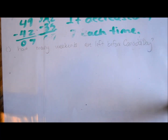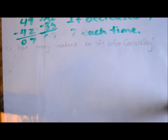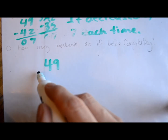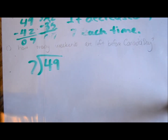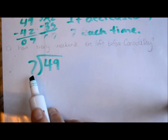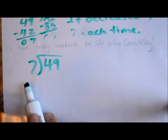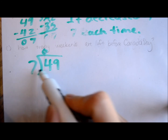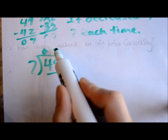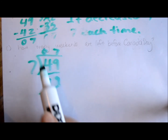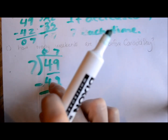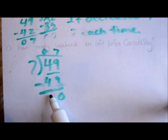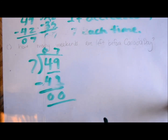Since we figured out this is our seven times tables and we're dividing, all we have to do is take the total number the pattern starts with — 49 — and divide it by 7. We're dividing by 7 because it's decreasing by 7 each time. How many groups of 7 are in 49? Seven goes into 49 seven times — 7 times 7 is 49, no remainder. The answer is 7. There are seven weeks left till Canada Day.